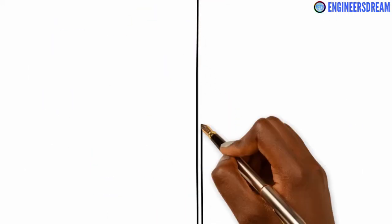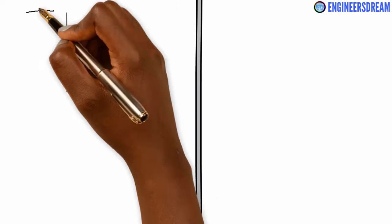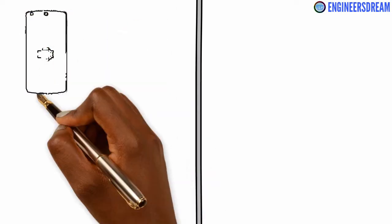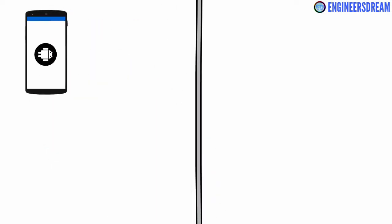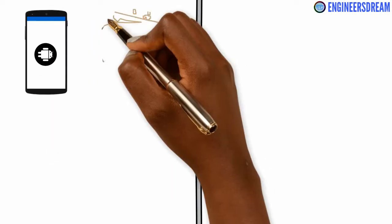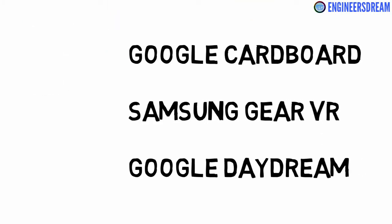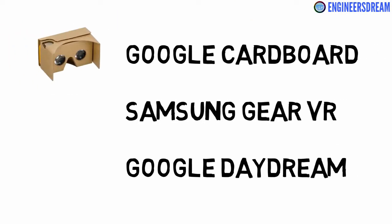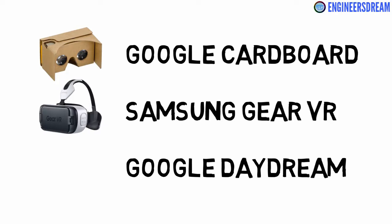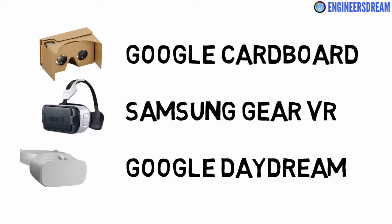There are two types of virtual headsets using which a user can experience virtual reality. In the first type of VR headset, you have to put your smartphone inside a cardboard or plastic casing — for example, the Google Cardboard, Samsung Gear VR, or the Google Daydream.